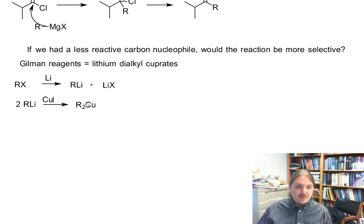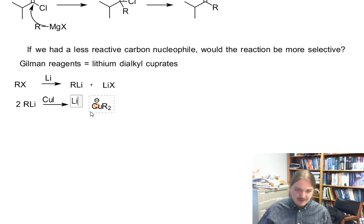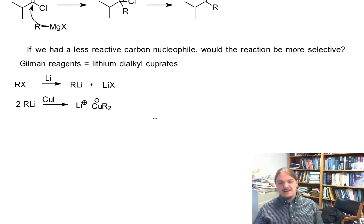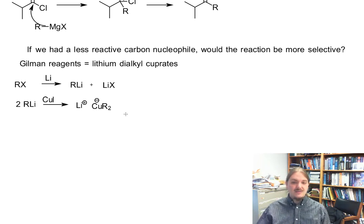What you would get is this dialkyl cuprate anion. The formal negative charge is actually on the copper, but copper is less electronegative than carbon. So the electron density is actually on the carbon. Because it was copper one, we have two things bonded to it. It's an anion, lithium is a cation. So we have this interesting lithium dialkyl cuprate.